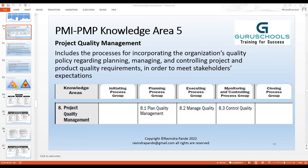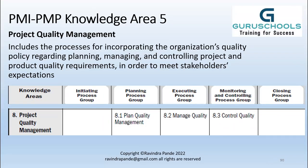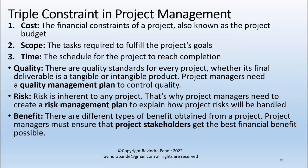We also discussed the overall balance of the golden triangle — how we balance cost, scope, and time. And we looked at how these internally reflect quality, risk, and benefits.